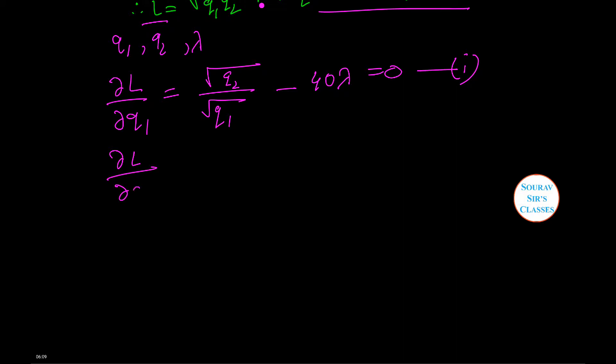Similarly dL by dQ2 equals root Q1 by root Q2 minus 16 lambda equals 0. This is equation 2.